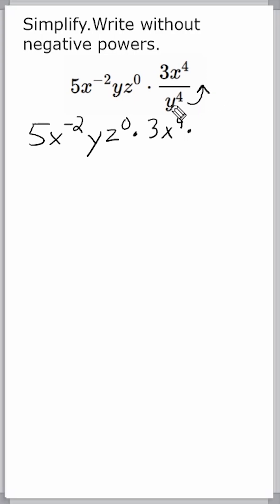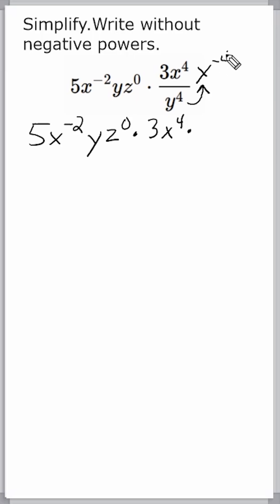Whenever moving a term with an exponent to the other side of the fraction bar, by rule all you have to do is write the opposite of what that exponent is. Because it is currently positive 4, we write that as y to the negative fourth. So this becomes 3x to the fourth times y to the negative fourth.